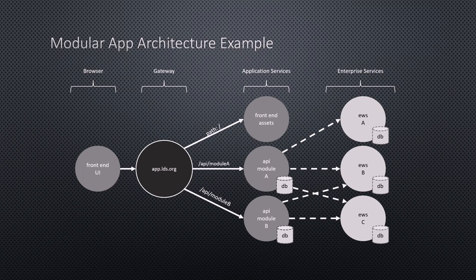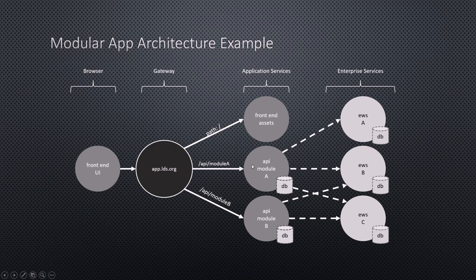We can use context path switching — for example, when a request comes in, if it's a request to the root, we want to get front-end assets, and those requests get routed off to a different server. Similarly, if the front end is calling an API, we could have that living on a different server. Those in turn can call back further to enterprise web services. An enterprise service is something like our geolocation service — consumed by lots of different applications and not specific to any one application, like a mapping service or membership data service.